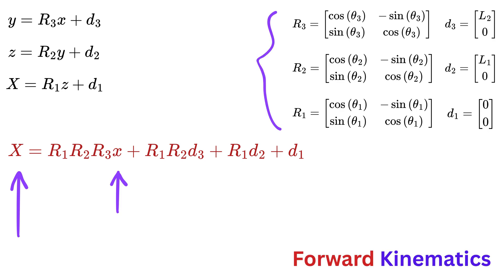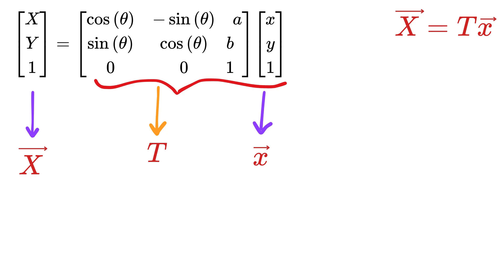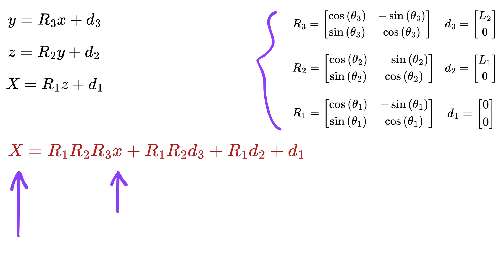Remember I said that we would represent the transformation using a single matrix T by combining both rotation and translation? Right now, we have separate r and d components at each step.